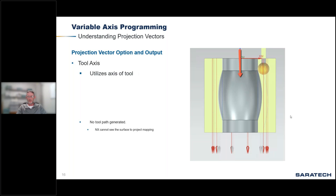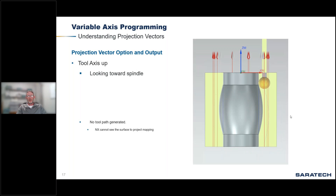Here are the vector options and their output. The straight-down tool axis option results in no toolpath — NX cannot see the surfaces beyond the blue line. Projection vector up has the same exact condition — it cannot see the surfaces beyond the blue line.